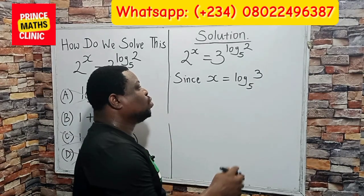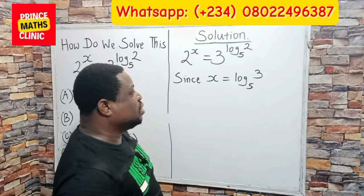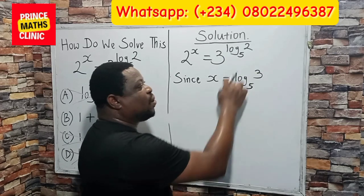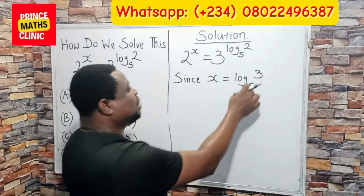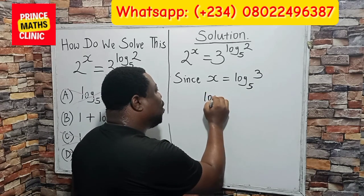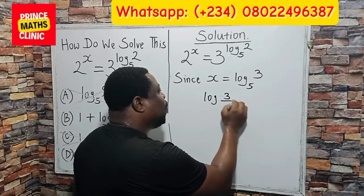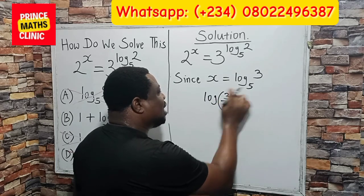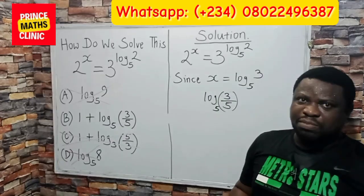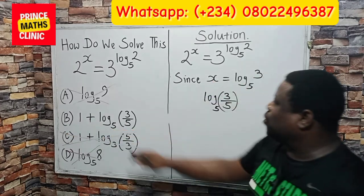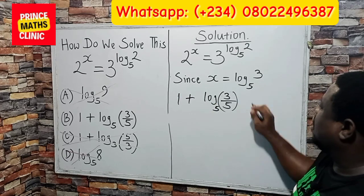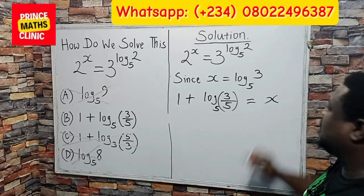So what do I do? I know from the change-of-base rule in logarithms that log of 3 in base 5 can be expressed as log of 3 over log of 5. These are the same thing. Using this approach, I will say 1 plus this expression equals my x.